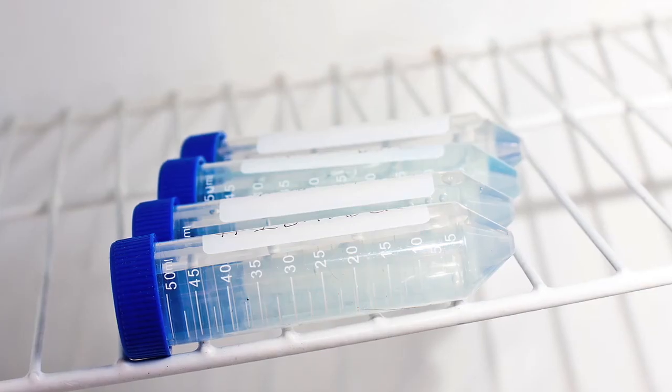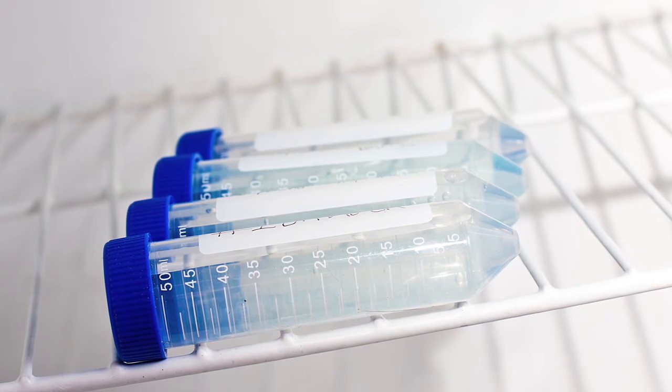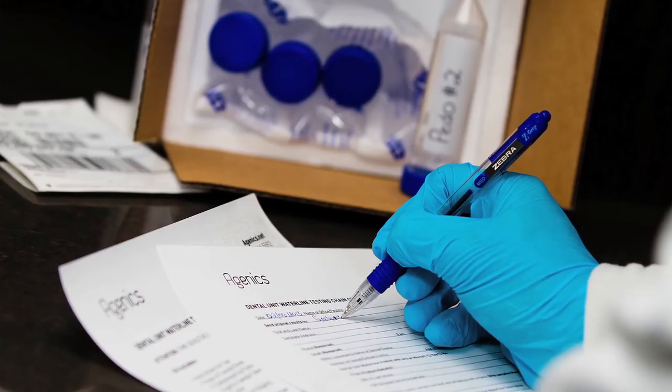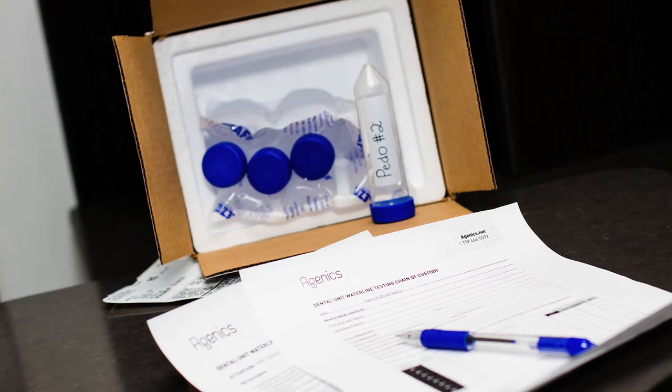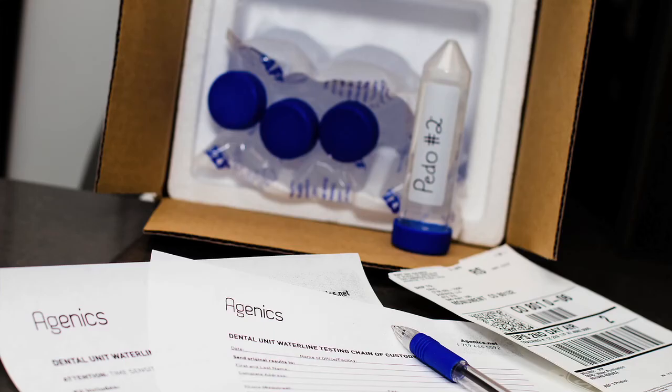Place the samples in the refrigerator until shipped. Do not freeze the samples. Complete the chain of custody form and make sure the sample numbers and descriptions match what is written on each vial. Place the form in the box.